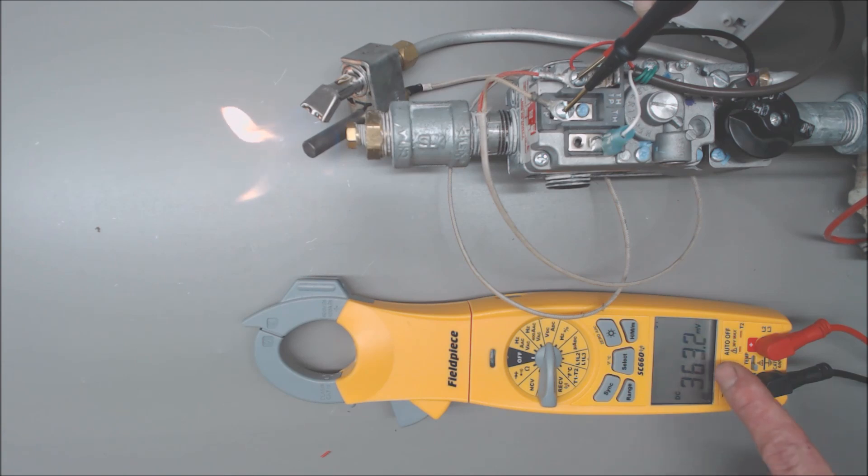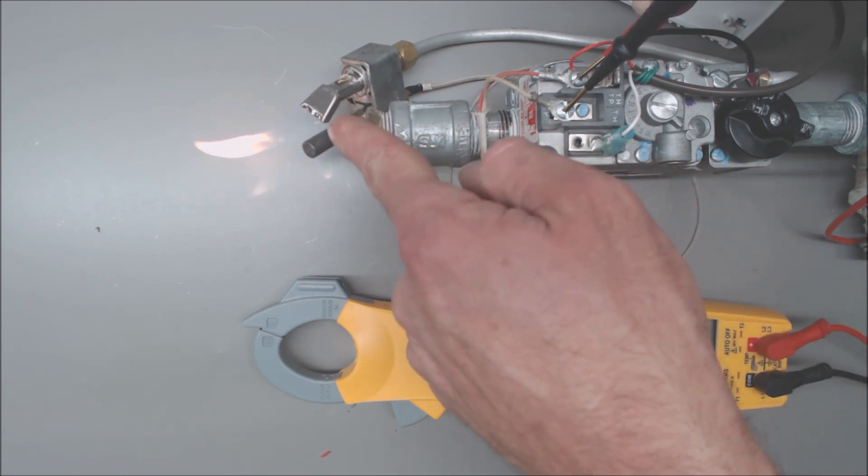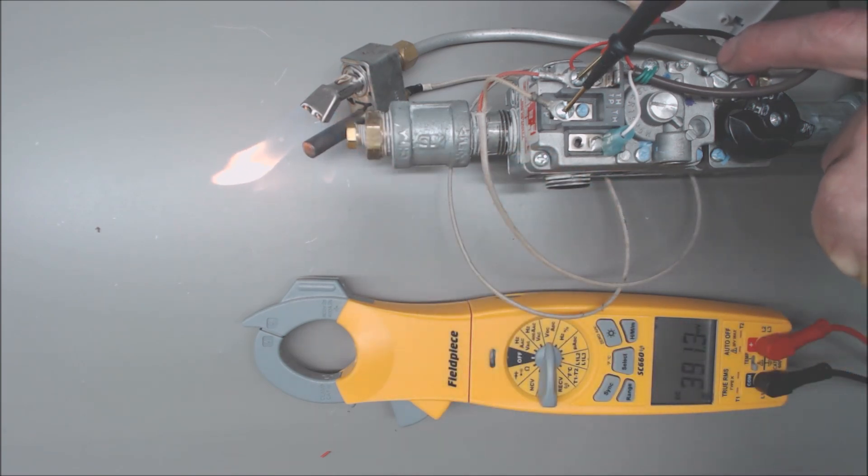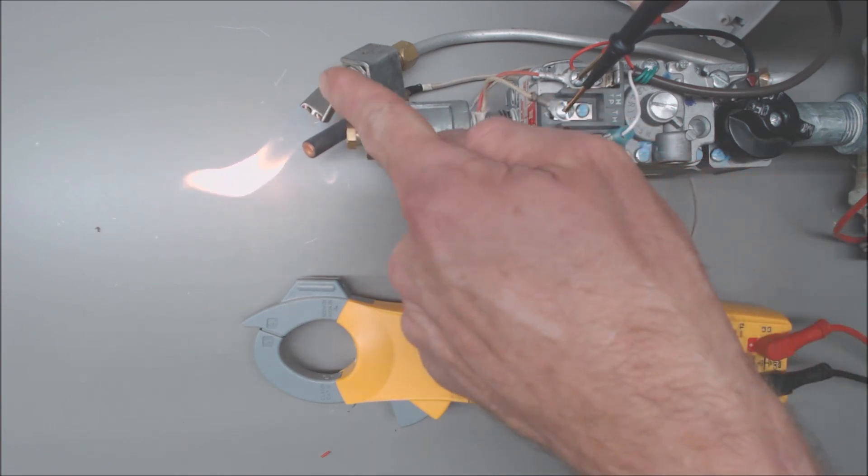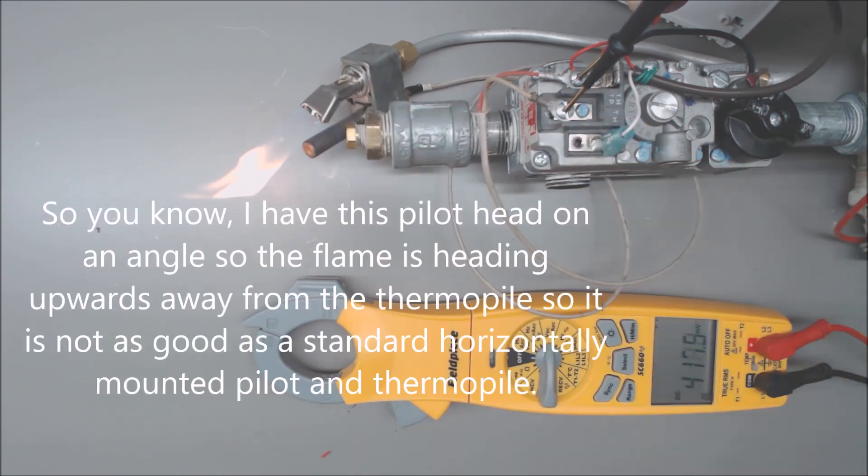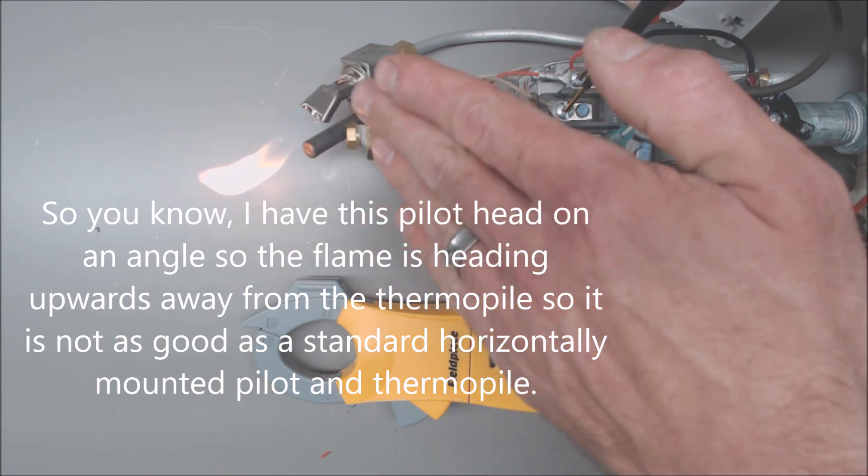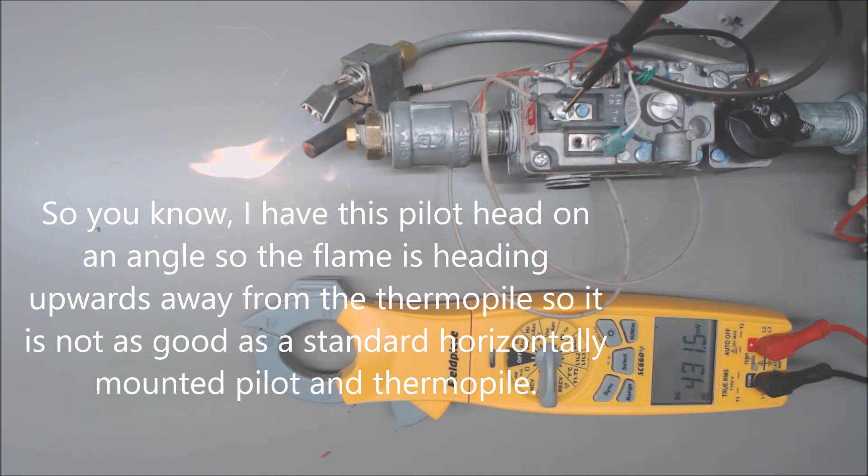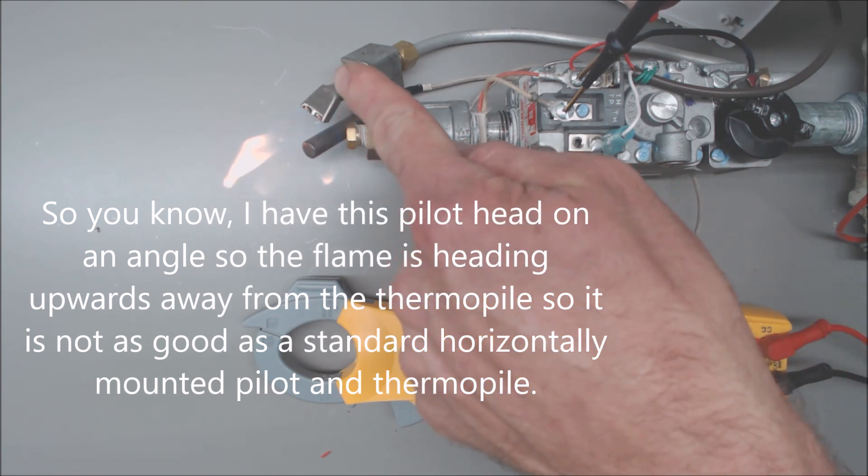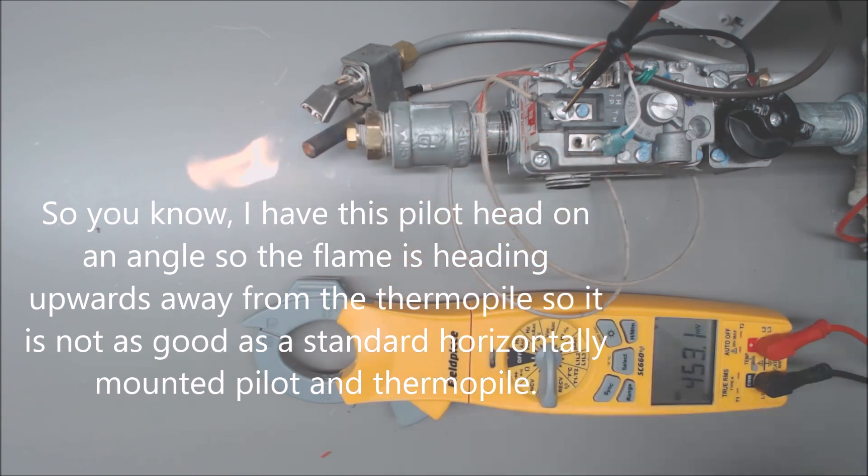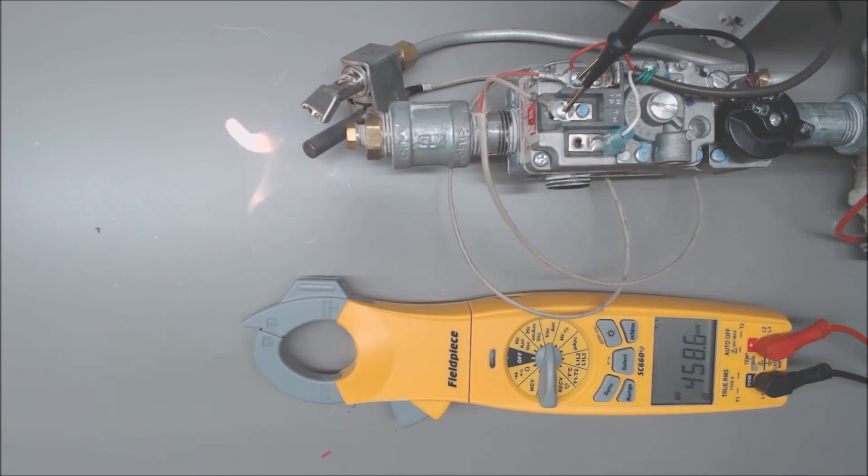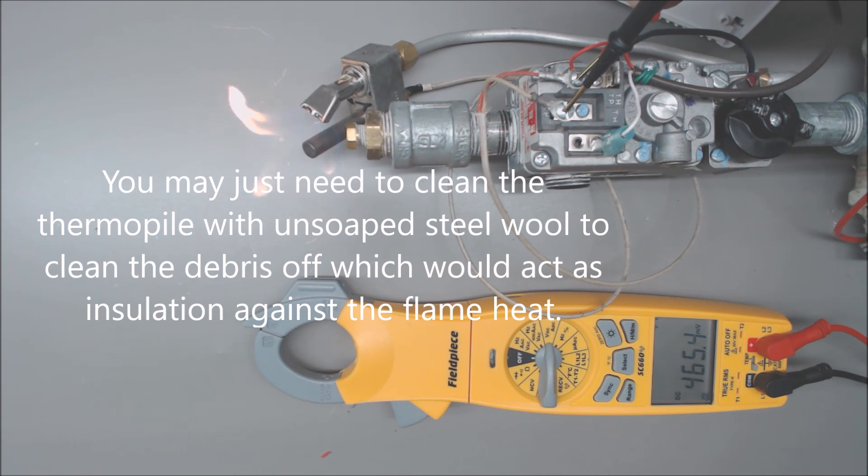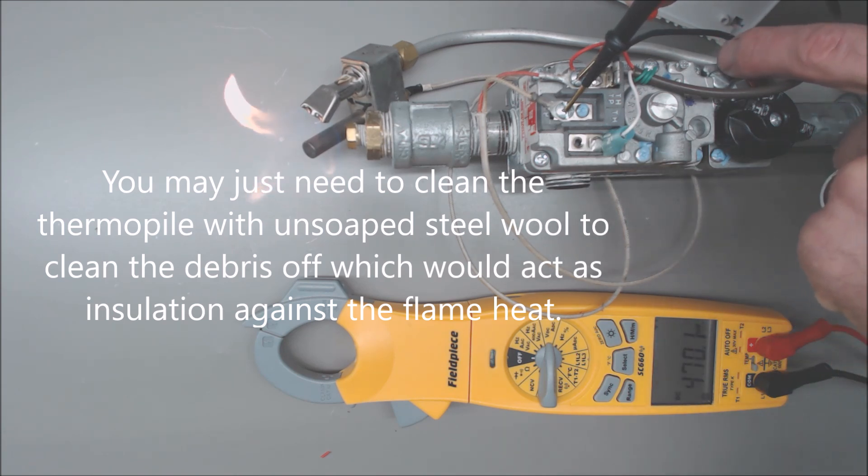If you do have a problem with not getting your millivolt reading up high enough, you may need to adjust your pilot flame. There's a little screw back here for pilot adjustment. You may need to adjust your flame, or maybe possibly this head is bent out of whack and maybe the flame is coming up too high and it's not really engulfing the thermopile. You may need to either replace that or adjust that pilot head, or you may need to adjust that flame higher.